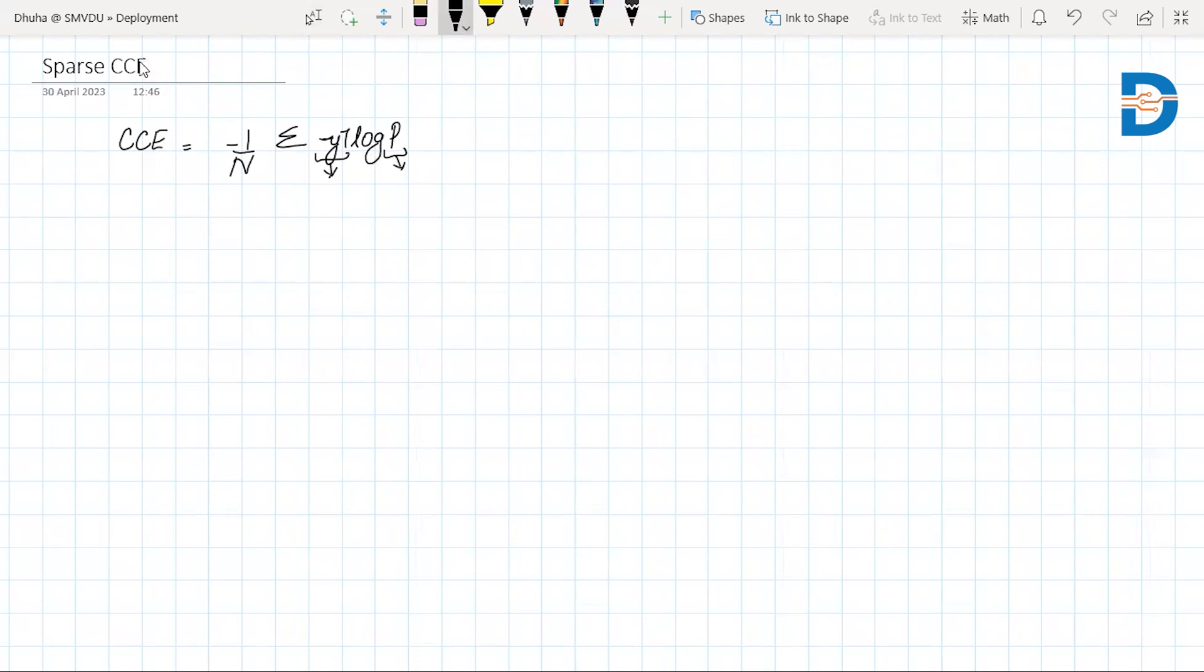So sparse categorical cross-entropy is a bit different than cross-entropy though both have the same loss function. This loss function is the same for categorical cross-entropy and sparse categorical cross-entropy. The difference is between the representation of classes.